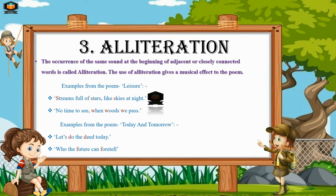The third literary device is alliteration — the occurrence of the same sound at the beginning of adjacent or closely connected words. For example, from 'Leisure': 'streams full of stars like skies at night' — the 's' sound is repeated three times. Note that 'closely connected words' means there can be one or two words in between. Another example: 'no time to see when woods we pass' — here the 'w' sound is repeated three times in adjacent words.